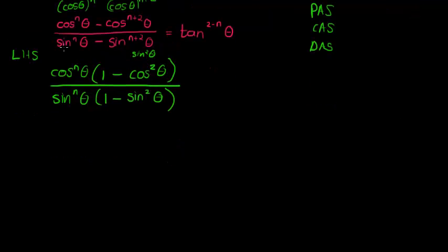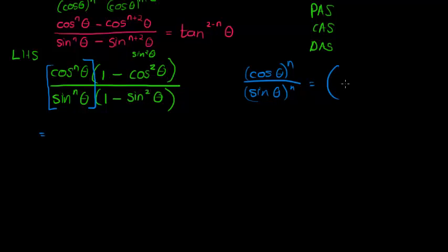My next step: I am going to notice that cos^n over sin^n is the same as saying cos of theta to the power of n divided by sine of theta to the power of n. That's the same as just saying cos of theta over sine of theta to the power of n—everything to the power of n, because the numerator and denominator are to the power of n.